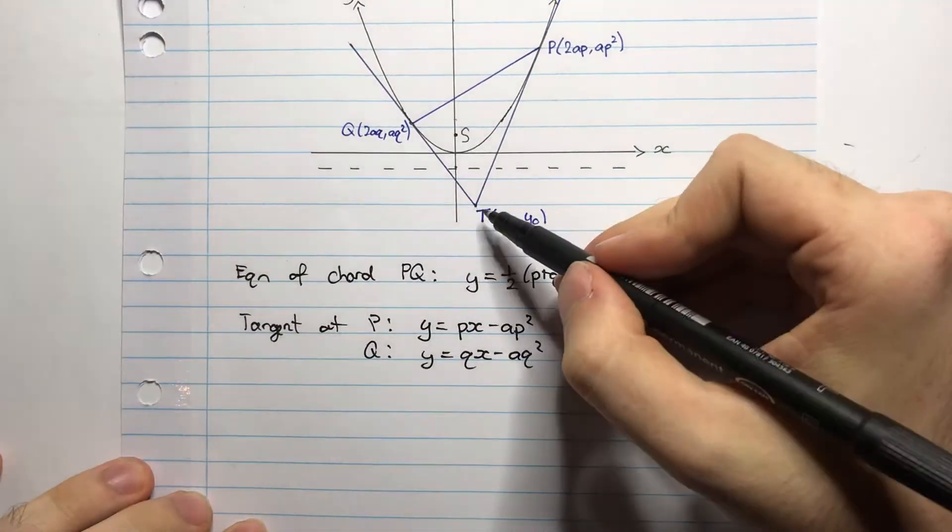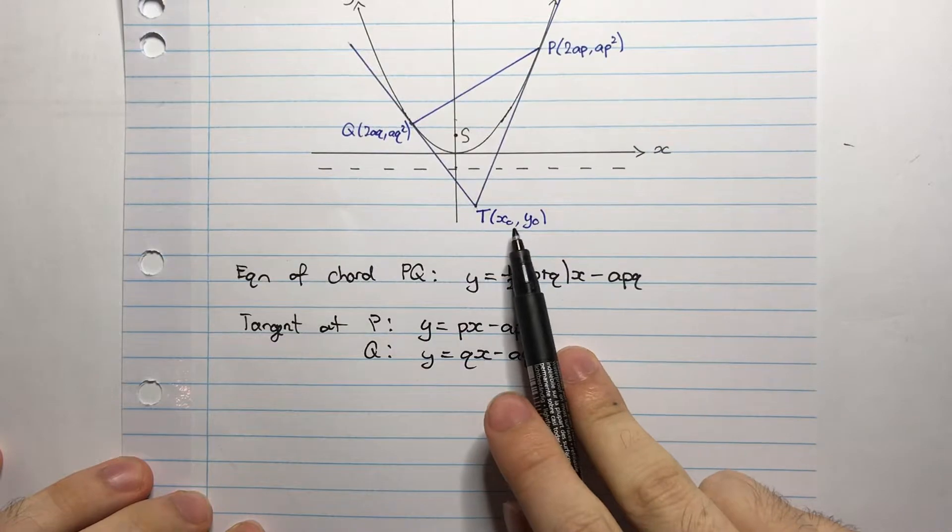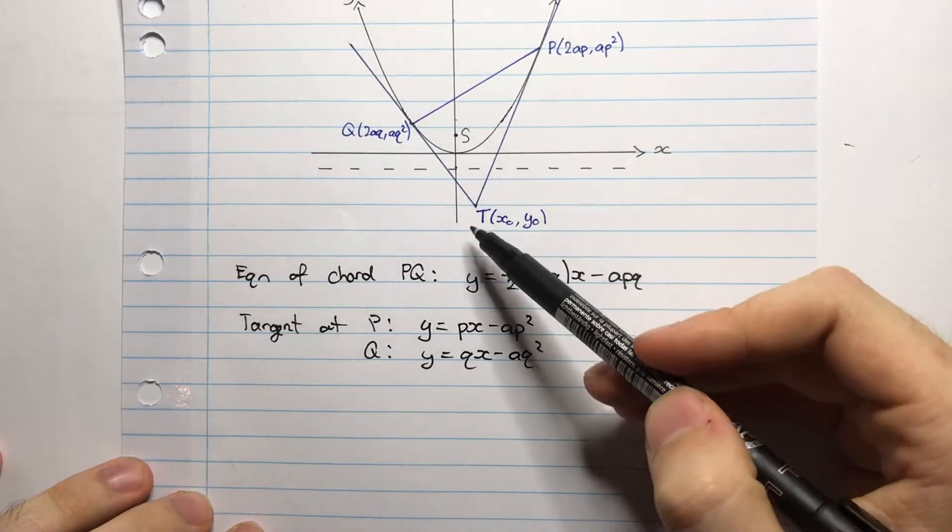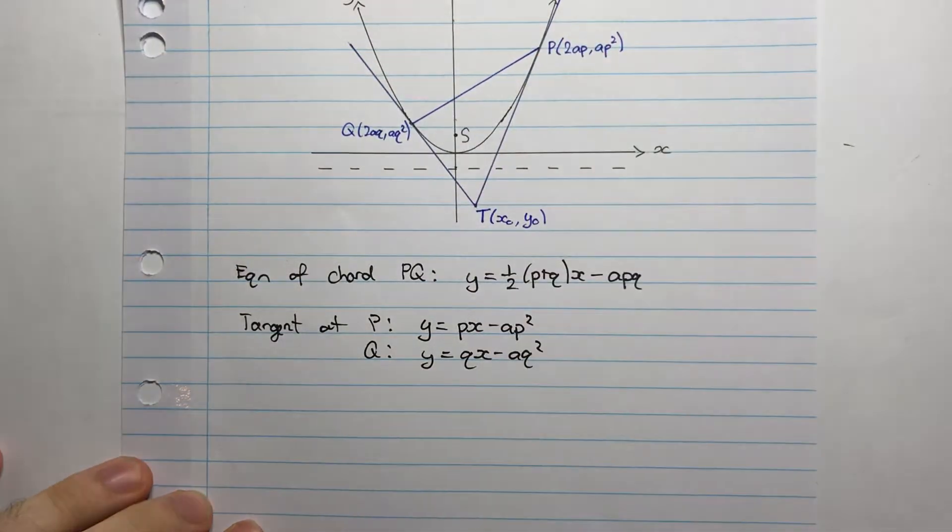Alright, now if I wanted to find the coordinates of the point T, how would I do that? Forgetting this x0, y0 business. If I just wanted to find the coordinates of T, well T is the point in which these two tangents intersect. So I'm going to solve these two simultaneously.